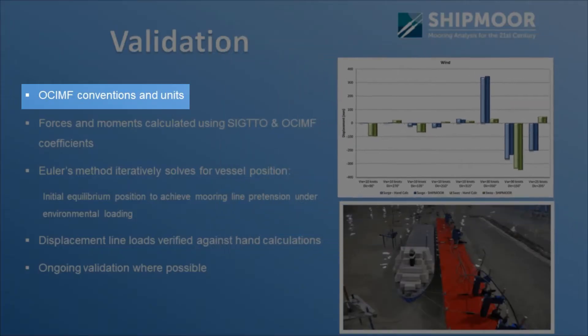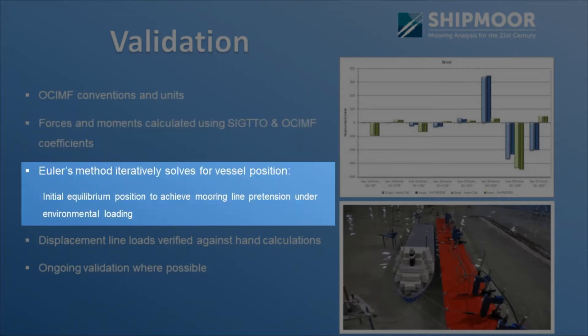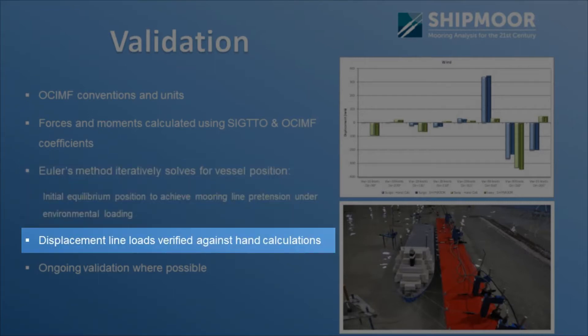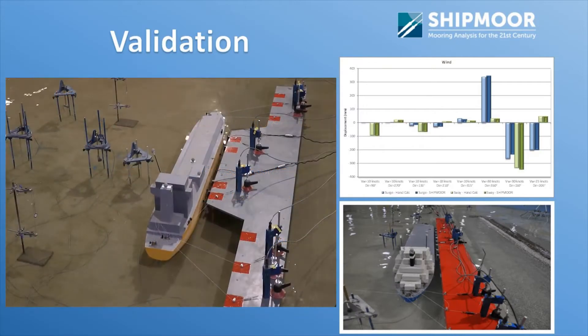We use all the OCIMF conventions and units. The forces and moments are calculated using standard SIGTTO and OCIMF coefficients. We use Euler's methods to iteratively solve the vessel's motions and its position, to give initial equilibrium position, mooring line pretensions and the environmental loading. And we finally calculate the displacement line loads and verify those against hand calculations. It has been proven to be quite accurate, and we continue to validate every aspect of the software where we have an opportunity, or where physical model testing is undertaken, or when we can measure full-scale ship mooring motions and mooring forces at berth.